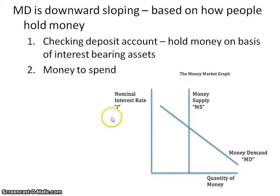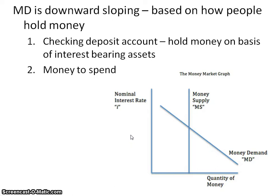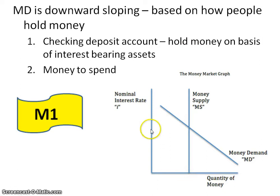When we talk about the money demand curve being downward sloping, it's based upon how people hold money. There are really two ways that people hold money: either in their checking account, or it's money that they have on them that they're going to spend. Both ways are very liquid, and so we're talking about M1 money when discussing the money demand curve.